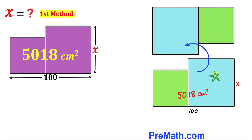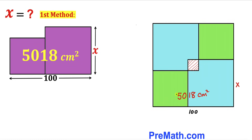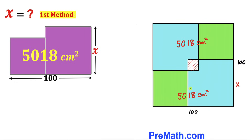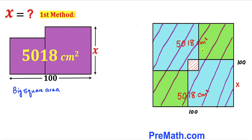In this next step I have rotated this shape counterclockwise 180 degrees to get another shape, and now I'm going to put these two shapes together. We can observe that if this side length is 100 centimeters then this side length has to be 100 centimeters as well. If the combined area for both squares is 5018 centimeters squared, then this area is 5018 centimeters squared as well.